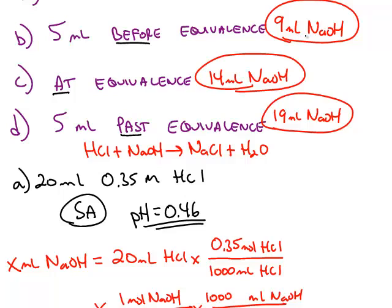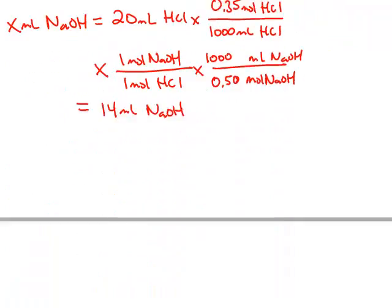Now we know how many milliliters it takes to reach equivalents, now we can calculate the pH at point B. So remember, our reaction in this case is hydrochloric acid, strong acid, reacting with sodium hydroxide. Sodium hydroxide is a strong base.